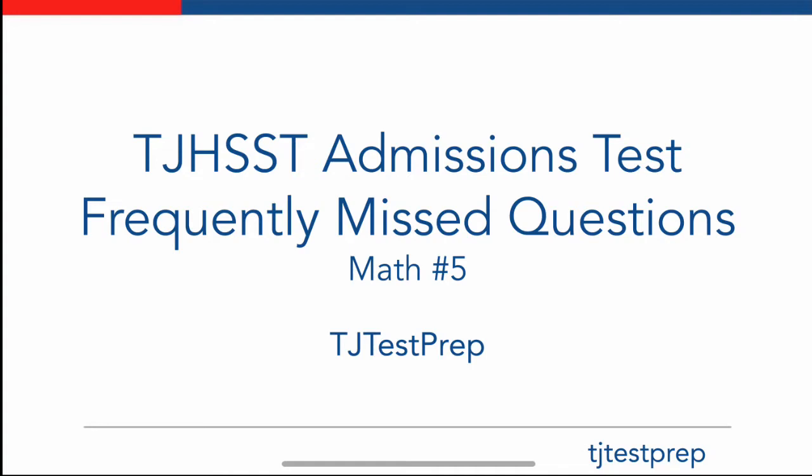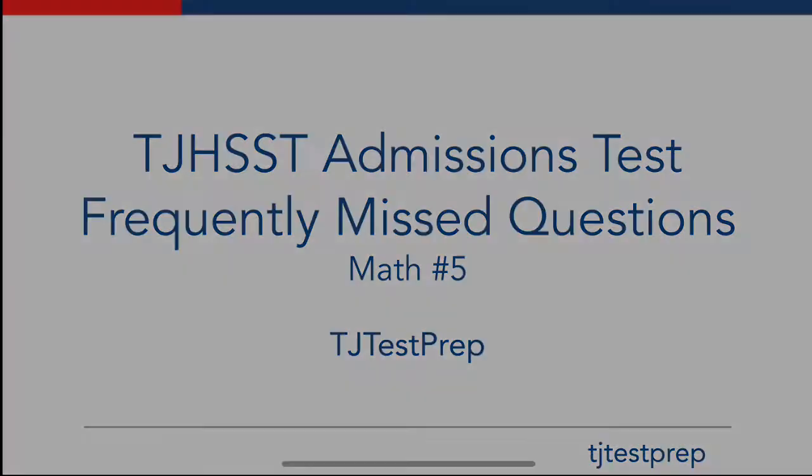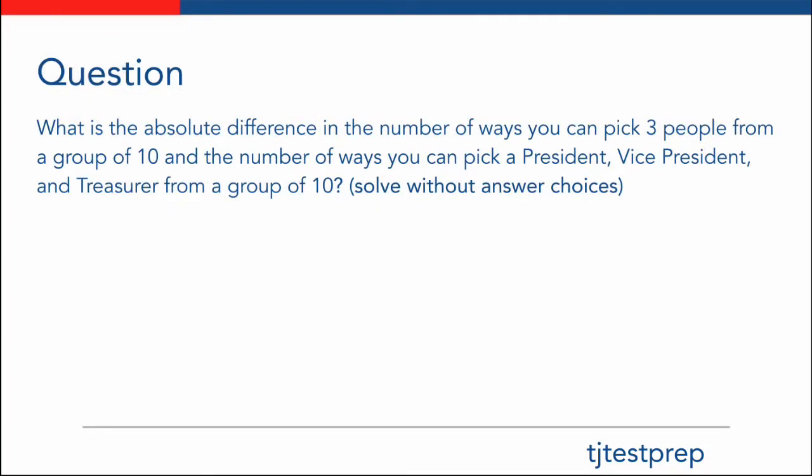Now on to the problem. We are asked: what is the absolute difference in the number of ways you can pick three people from a group of ten, and the number of ways you can pick a president, vice president, and treasurer from a group of ten? Solve this without answer choices. Try to answer this question by yourself first, and then come back for the answer and solution.